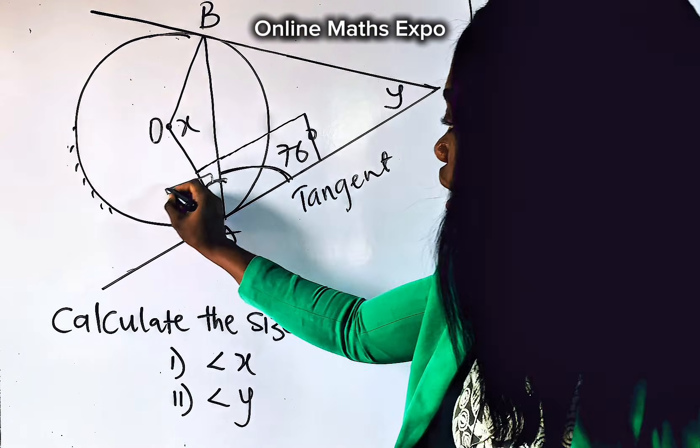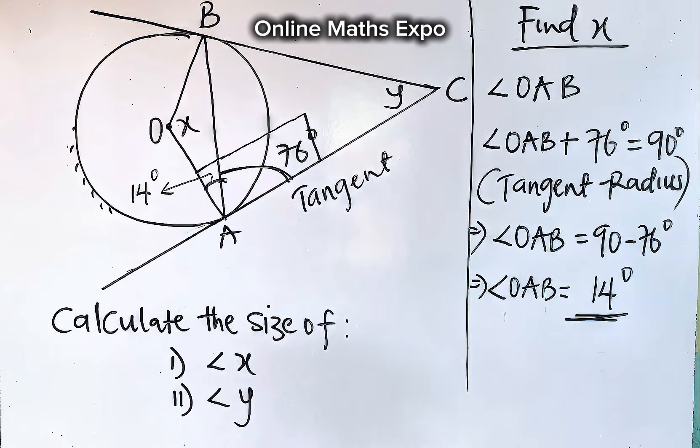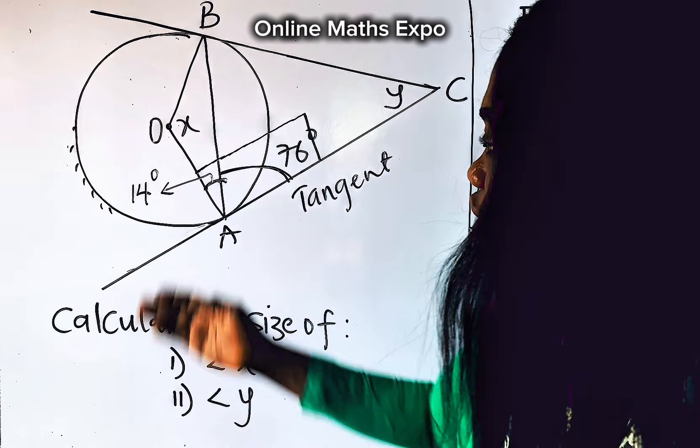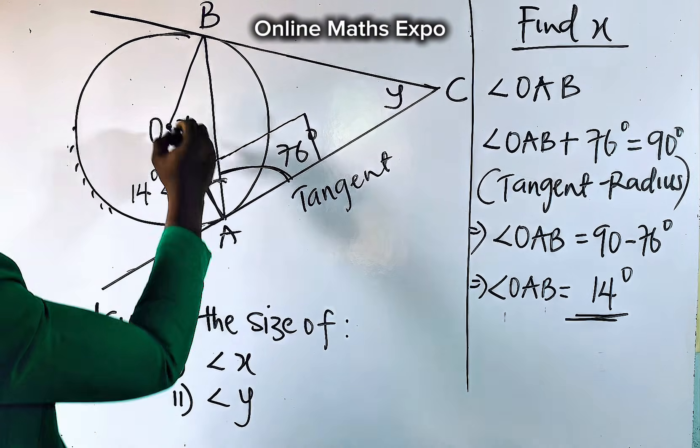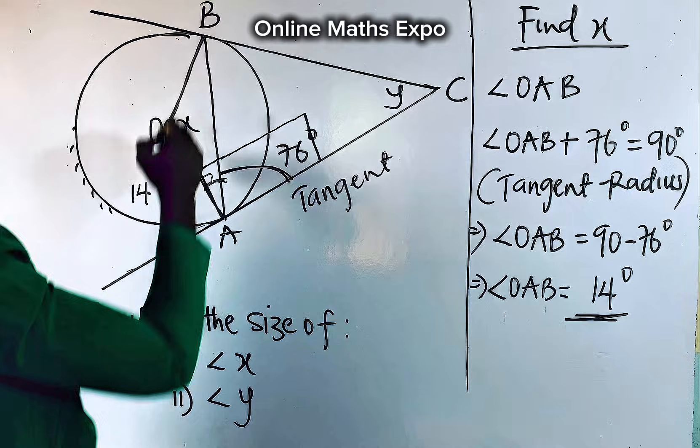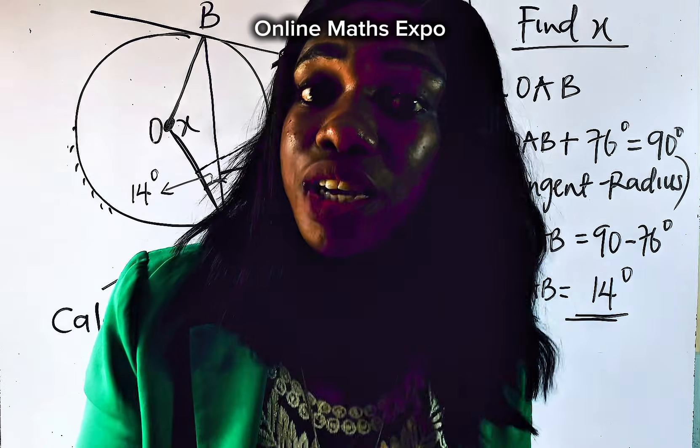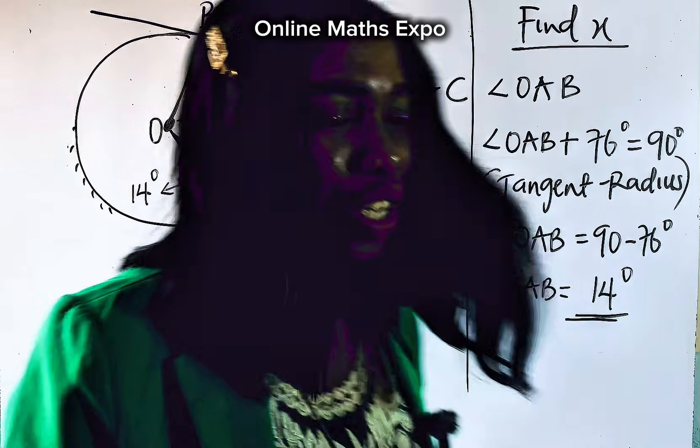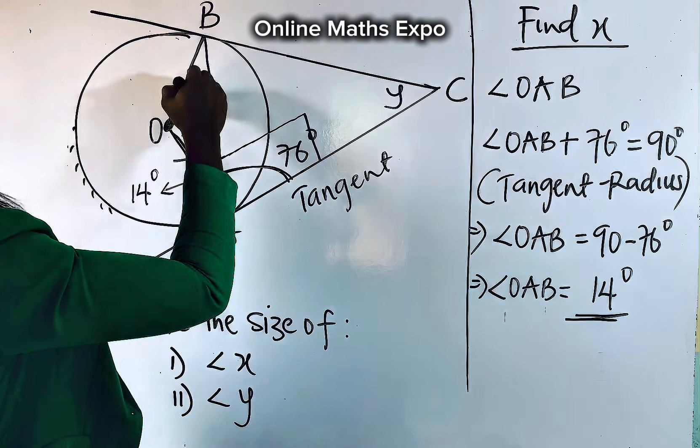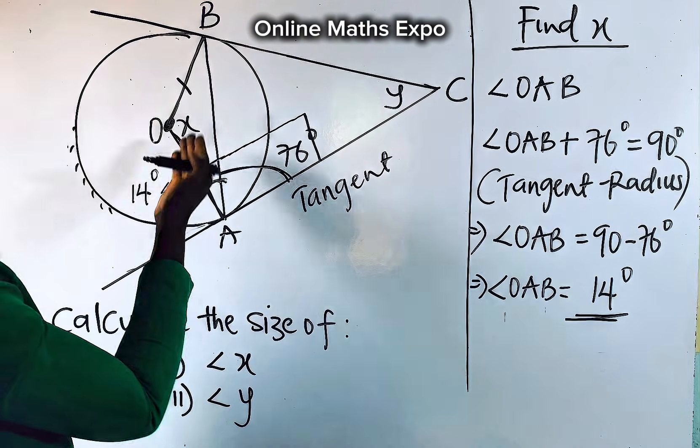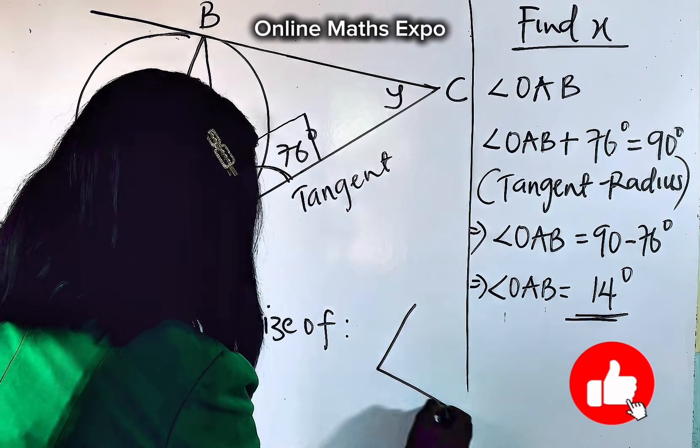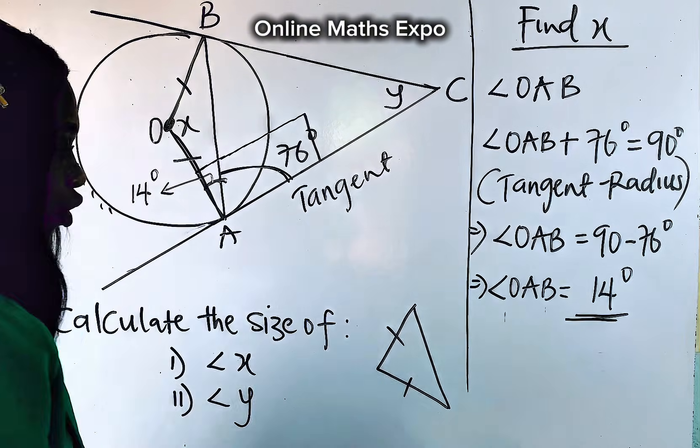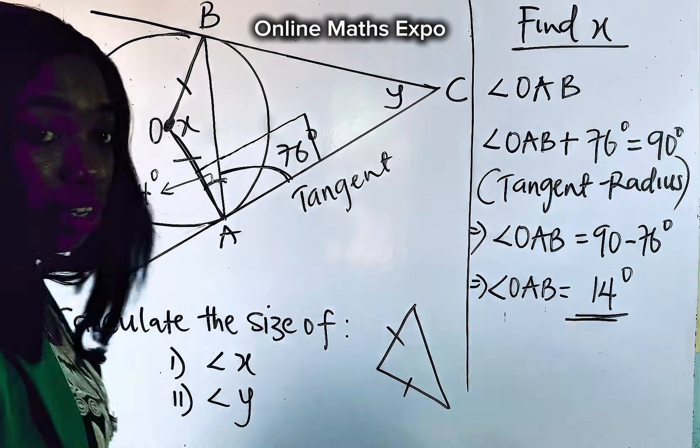It means that the tiny angle here has given us 14 degrees. Now that we have found that, will it help us to find the value of x? Now, if you go back to this diagram, you observe that from here to here, we have said this is the radius, and also from here to this place is the radius. And one thing about radius is that radii are always equal. So in that case, this line and this line are equal.